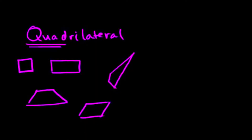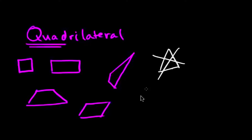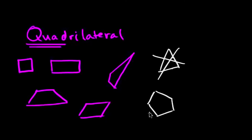So what's not a quadrilateral? Well, a triangle would not be a quadrilateral — it has three sides: one, two, three. So let's cross that out. A pentagon has five sides — that would not be a quadrilateral.